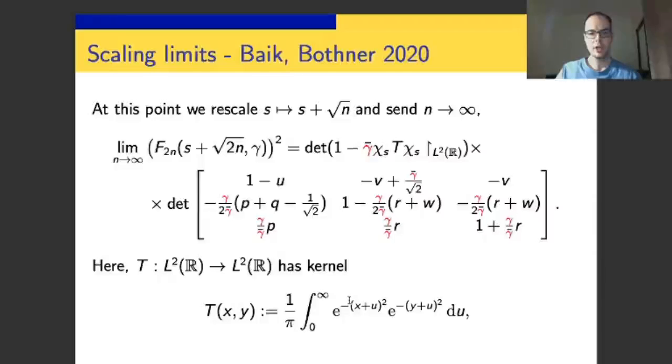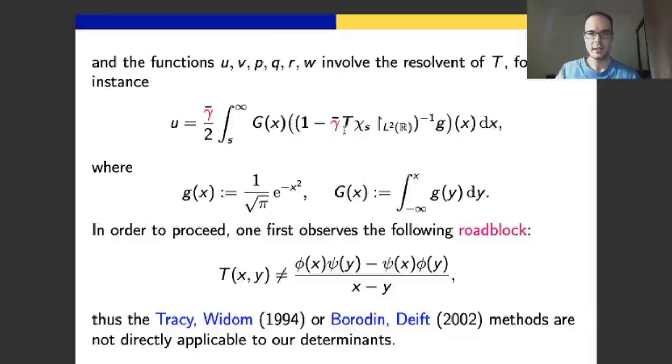Once you have this, you center and rescale everything correctly to obtain a meaningful limit. The meaningful limit is written here. Out front, ordinary Fredholm determinant of a trace plus operator T. T's kernel is written down there. And then a determinant of a certain three-by-three matrix. That matrix depends on a bunch of unknowns, u, v, and so forth. All those unknowns are expressed in terms of the resolvent of this operator T.